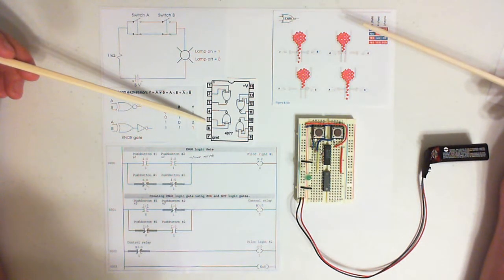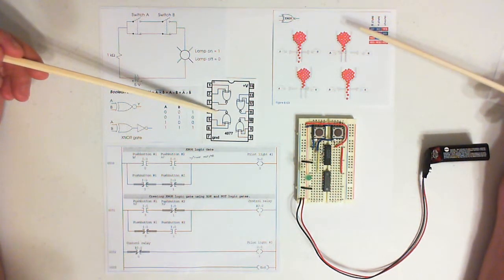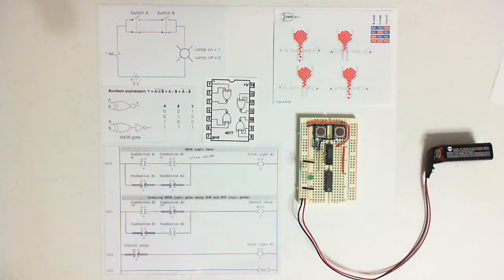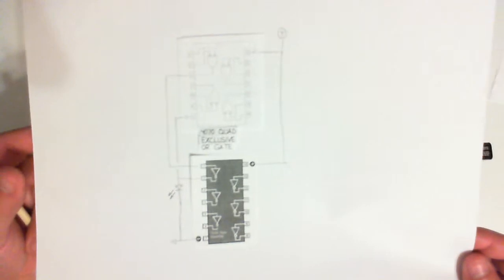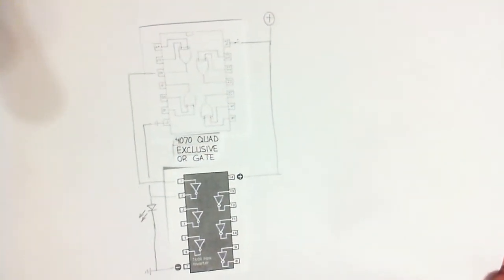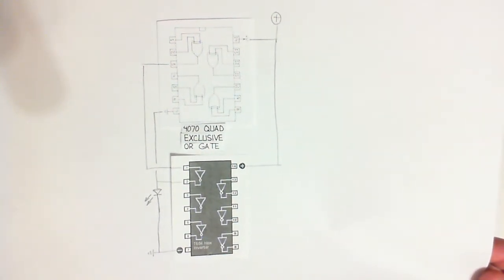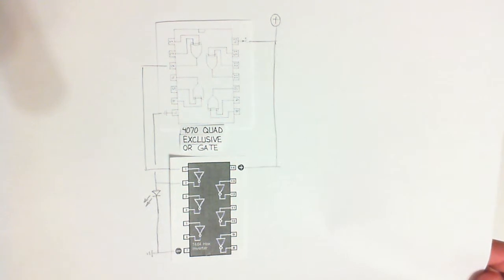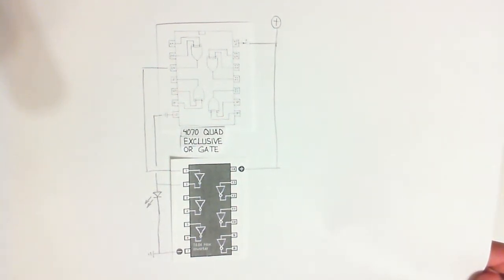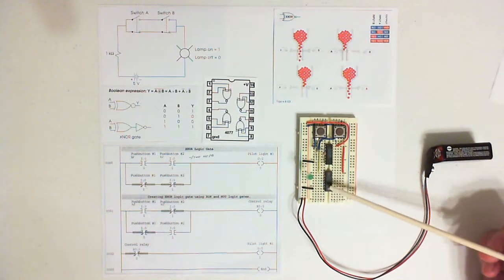This right here is a 4077 IC chip. This is a typical X-NOR gate chip. I couldn't find one, so what I did was I built one that does the very same thing, except I used two different chips: a 4070 quad exclusive OR gate with a 7404 hex inverter chip. And that's what's happening here.